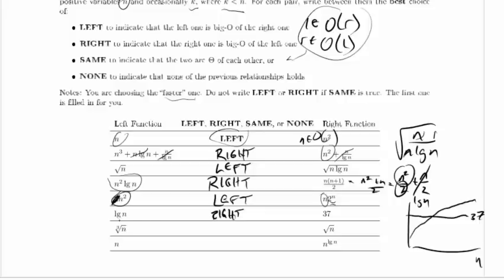Cube root of n versus the square root of n. Well that's n to the 1/3 and this is n to the 1/2. And n to the 1/3 is going to grow more slowly than n to the 1/2. Any time we compare two polynomials, if one of them has a lower exponent, it will grow more slowly and it will be faster.